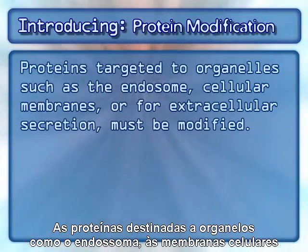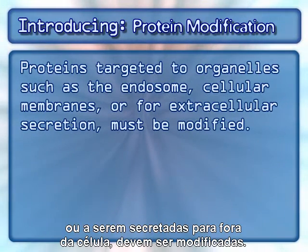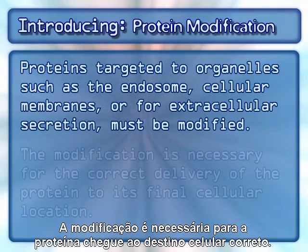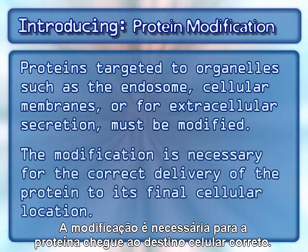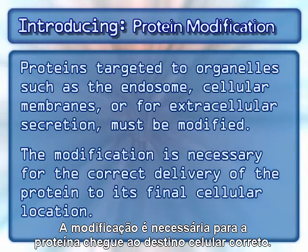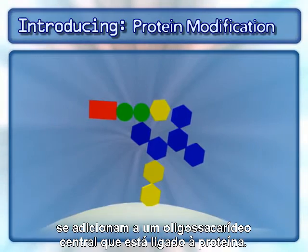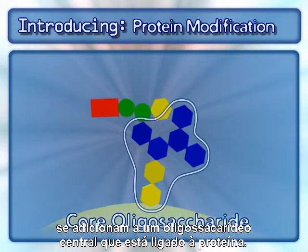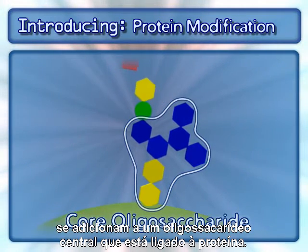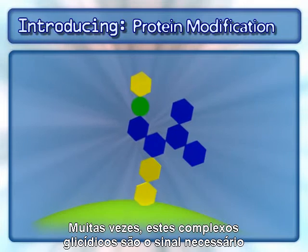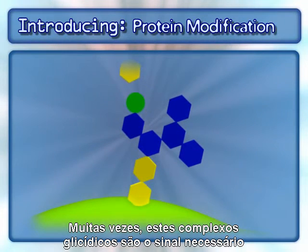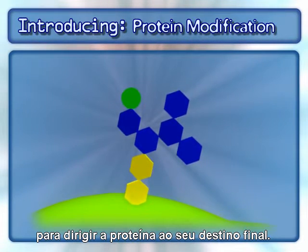Proteins targeted to organelles, such as the endosome, cellular membranes, or for extracellular secretion must be modified. The modification is necessary for the correct delivery of the protein to its final cellular location. The modification occurs when specific sugar molecules are added to a core oligosaccharide that is attached to the protein. These sugar complexes are the signal often required to direct the protein to its final destination.